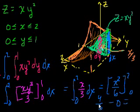2² over 6 is 4/6 minus 0 over 6, which is equal to 0, equals 4/6. What is 4/6? Well, that's just the same thing as 2/3.